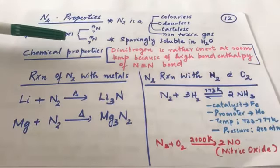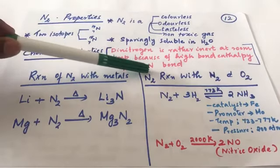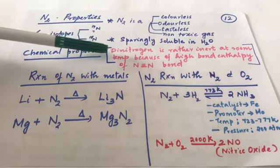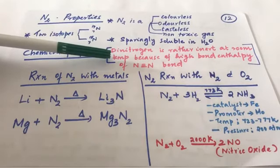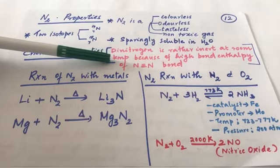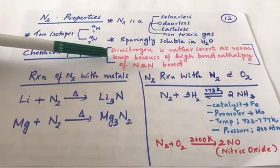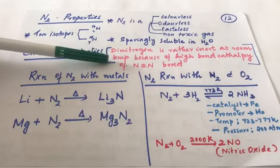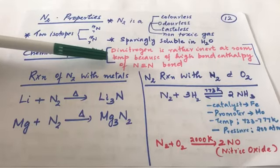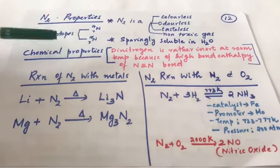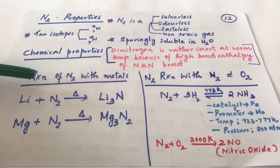Dinitrogen is rather inert at room temperature because of the high bond enthalpy of the N≡N triple bond. A question may be asked: 'What is the reason behind the inert nature of dinitrogen?' The answer is the high bond enthalpy of the triple bond. You need to write this down in your notebook as it is a textbook question.